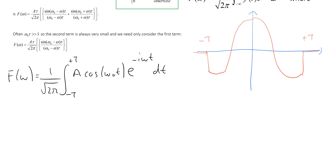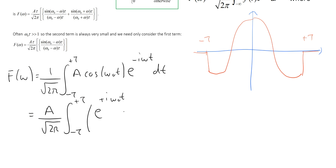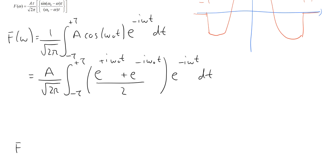One easy way of doing this is to use the fact that we can write the cosine as a sum of two complex exponentials. So we bring out the factor a divided by the square root of 2 pi, and the integral between minus tau and plus tau; the cosine term we write as e to the plus i omega-0 t plus e to the minus i omega-0 t, all divided by 2, and then multiply by the complex exponential e to the minus i omega t from the Fourier transform.